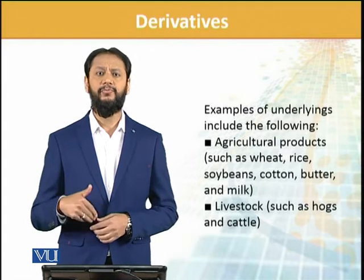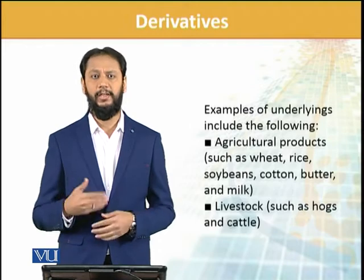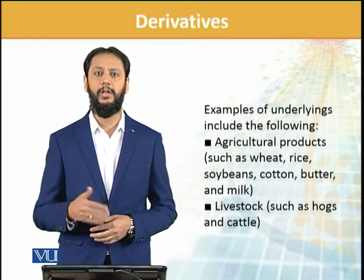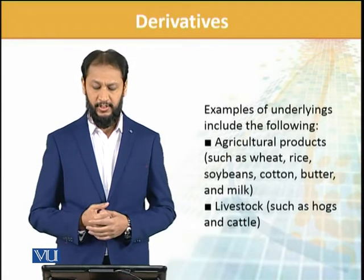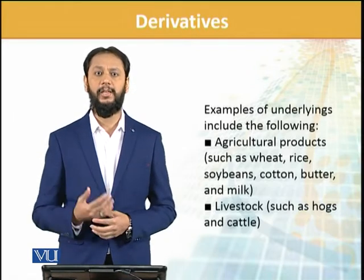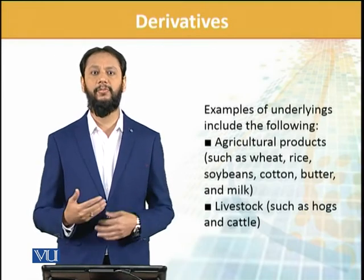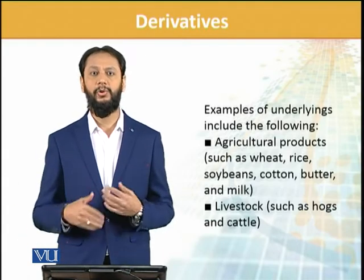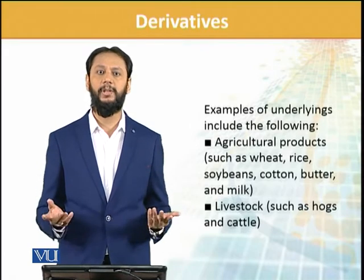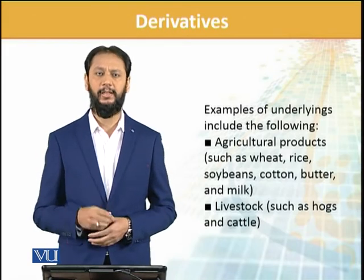Examples of underlyings — we discuss these for sample purposes and this list is not exhaustive; it is to be continued with many more. But understanding these will give you an idea of what kinds of derivatives we are talking about. They could be on agriculture products such as wheat and rice. For example, a farmer who grows wheat has the risk that when his harvest is ready, he doesn't know what the rate will be — so he might be interested in a derivative. Similarly, the flour mill owner also faces the risk of not knowing the wheat rate, so they might be interested too. We will discuss this in detail with examples.